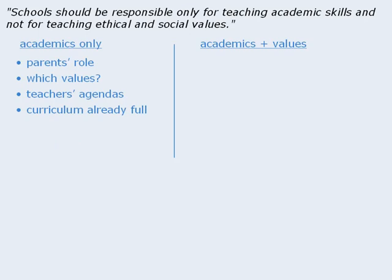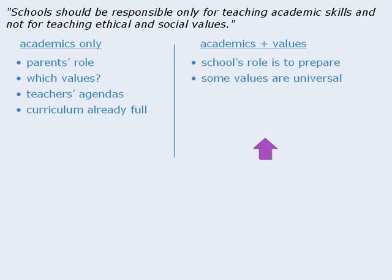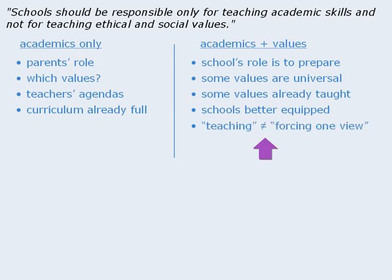That's a good start. Now what about the other side — what are some points for schools teaching values in addition to academics? Well, we could say that schools are meant to prepare students for adult life, and values are a part of adult life. Also, some values are universal and should be taught in school. Another point is that schools already teach values indirectly. We could also add that schools are better equipped for teaching values since the teachers are professional educators.